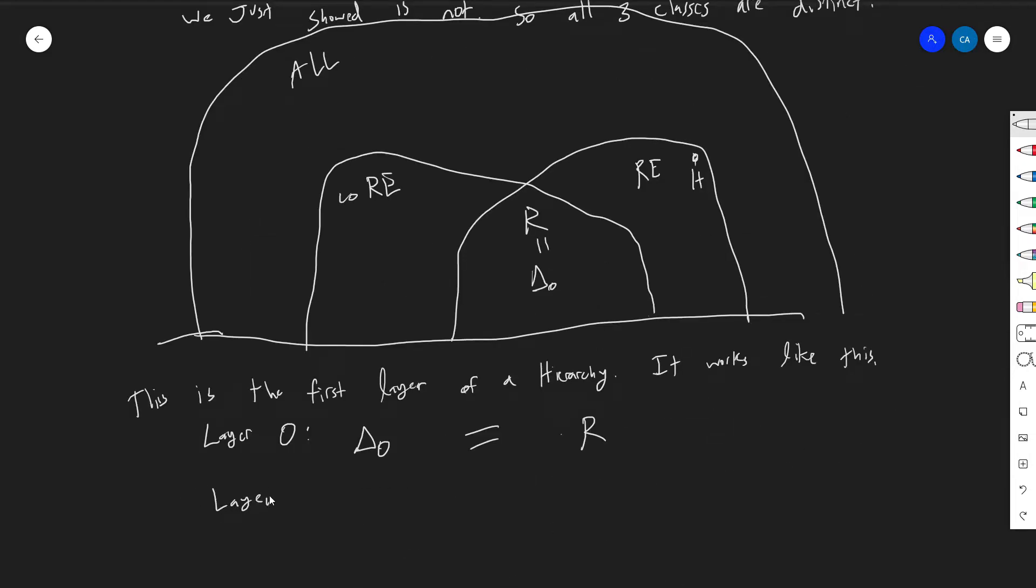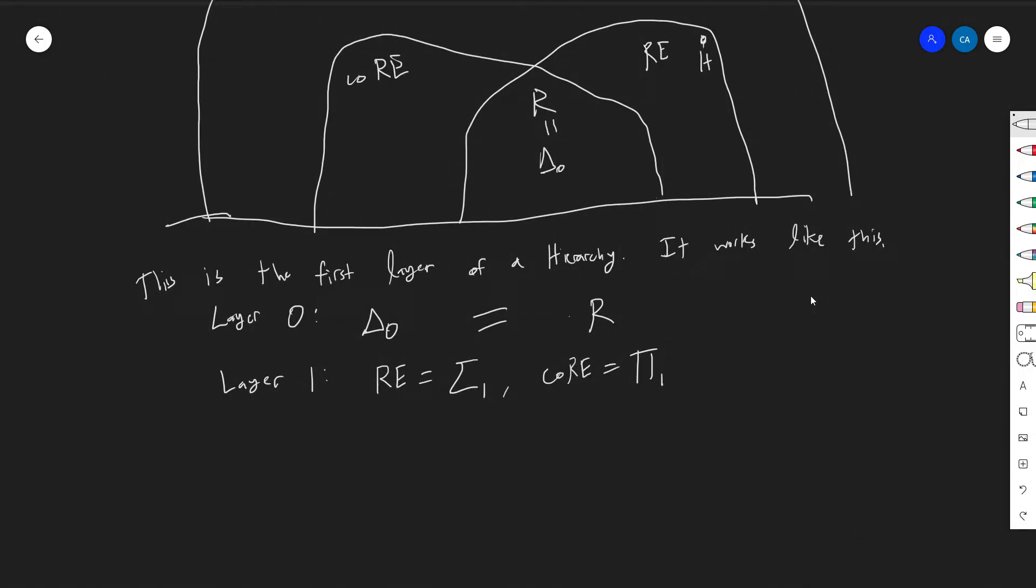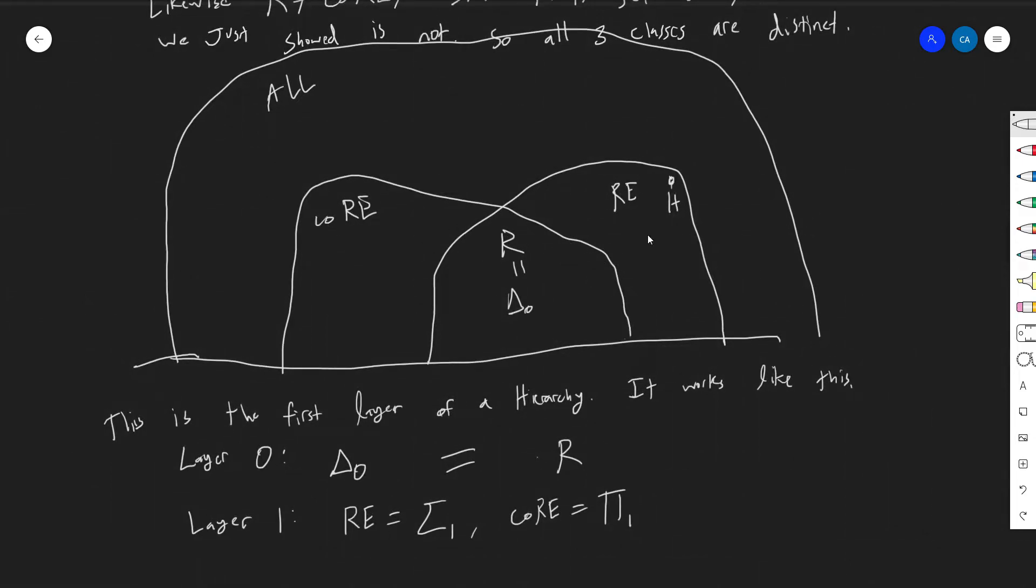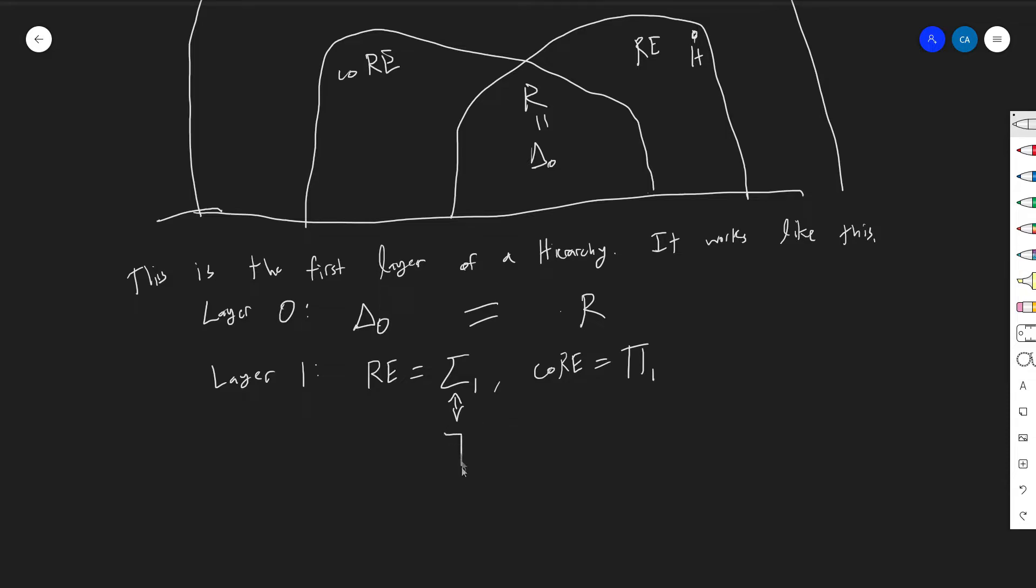Layer 1, I'm going to say R is equal to sigma 1, and co-R I'm going to say is equal to pi 1. And so how are we going to define sigma 2? So basically the idea is that the delta classes are the ones in the middle, the sigma classes are these guys, and the pi classes are these guys. And you can kind of think of the sigma classes are going to be associated with the exists quantifier, and then these are going to be associated with the for all quantifier.